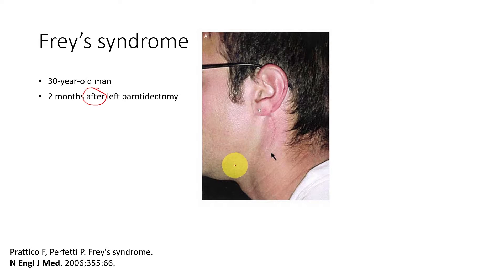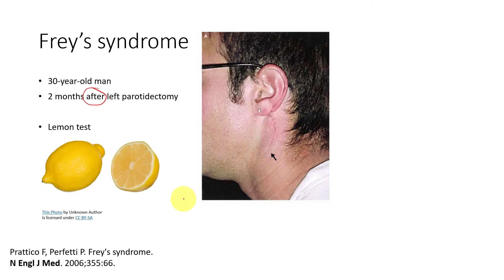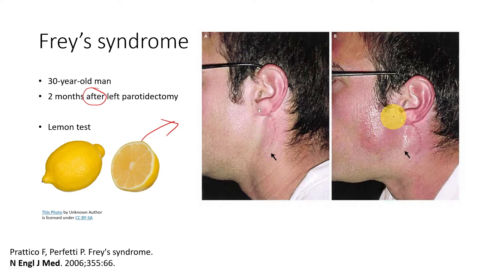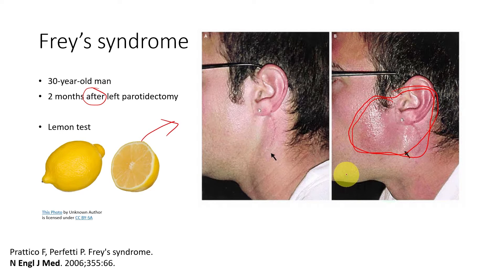Taking his history, the doctor suspected Frey's syndrome, and he underwent what was called the lemon test. The lemon test basically involves introducing something highly stimulative — called a sialogogue — which increases the secretion of saliva. When this was given, they noticed that this person had intense flushing and sweating over the parotid region and also the auricular region.